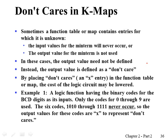Sometimes a function table or kmap may contain entries for which its value is unknown. Two cases are: the input values for the minterm will never occur, or the output value for the minterm is not used at all. In the kmap, we may specify those minterms as unknown or don't-care. We put x instead of 0 or 1 in the kmap, and we interpret x as either 0 or 1 at our convenience, toward minimizing the cost of the implementation.